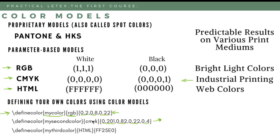For HTML colors, you can use a Chrome extension like EyeDropper to capture the HTML hex code from any web page color. You can then use that hex code to define the color in LaTeX. This lets you define countless colors with your own names and use them the same way as other colors — with \textcolor, \pagecolor, etc.